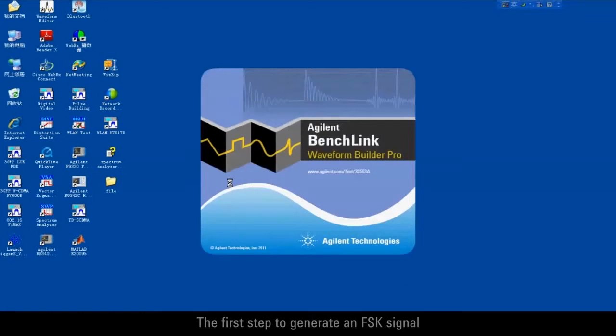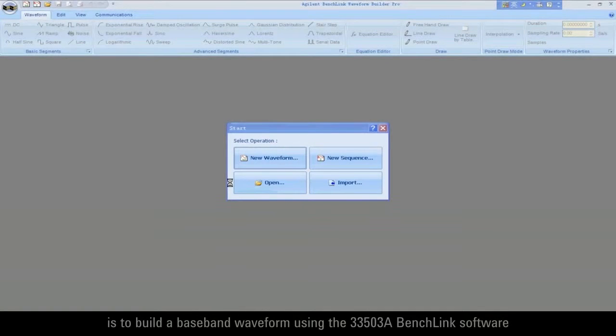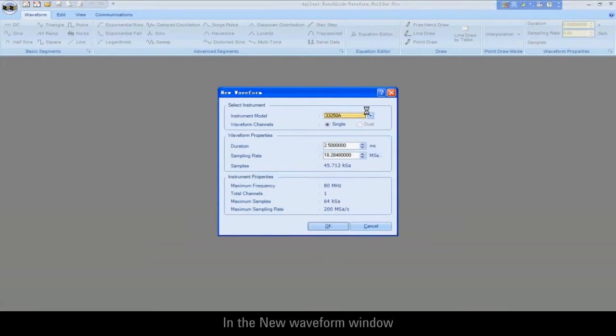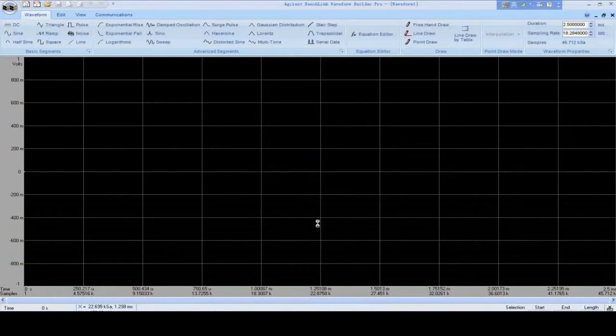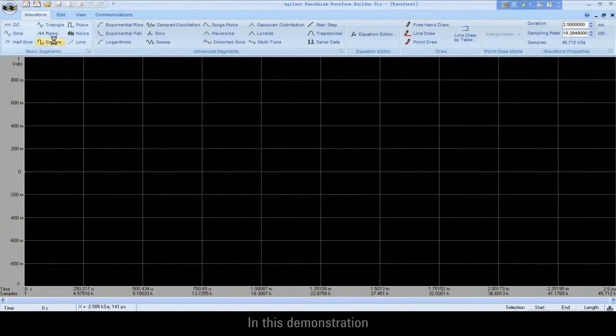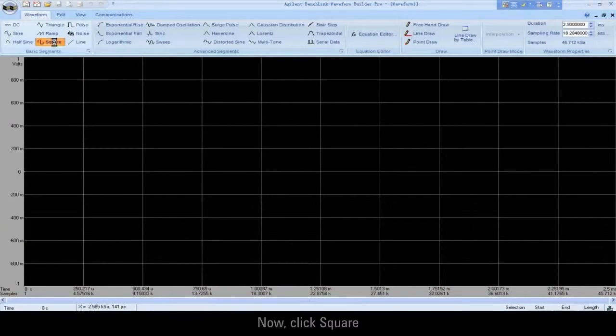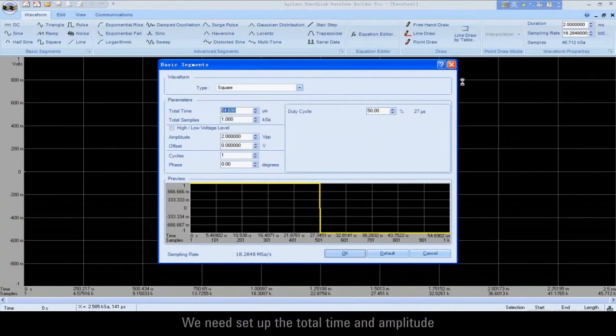The first step to generate an FSK signal is to build a baseband waveform using the 33503A BenchLink software. This is done by running the 33503A BenchLink software on the PC. Click New waveform. In the New waveform window, select Instrument model from the drop-down list and check 33250A. Then click OK to continue. In this demonstration, we apply the built-in square waveform to start the waveform editing. Now, click Square. A basic segments window pops up.